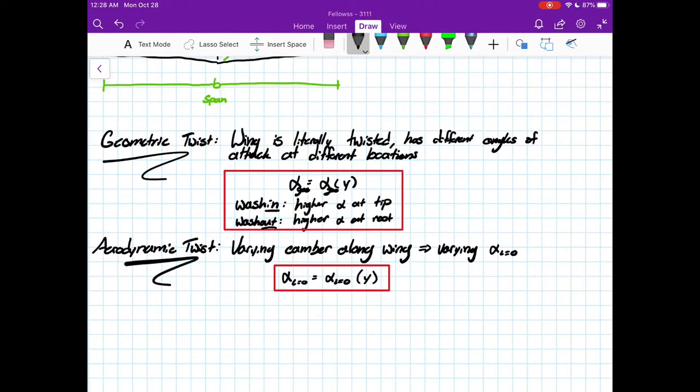Similarly, we have aerodynamic twist, which is where we have varying camber along the wing. If we have different cambers, we have different zero lift angles of attack. This effectively says that alpha L equals zero is a function of the spanwise direction.